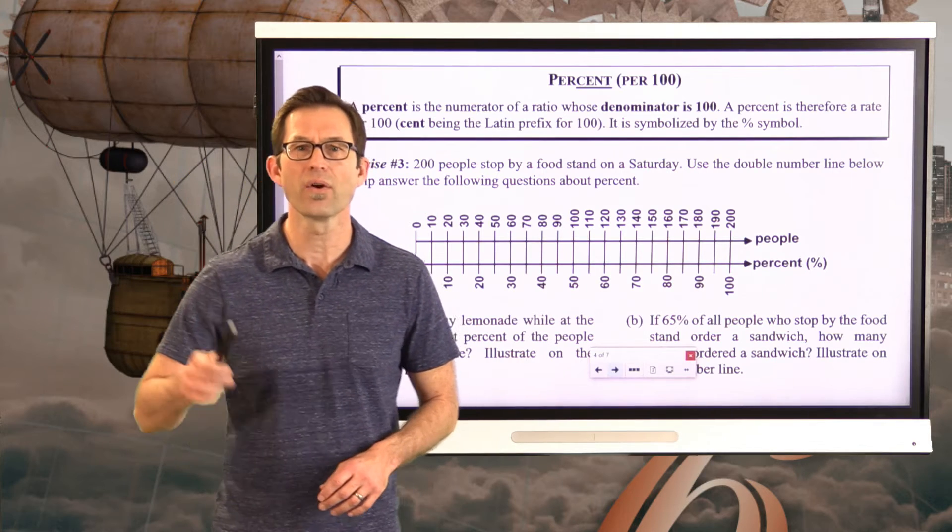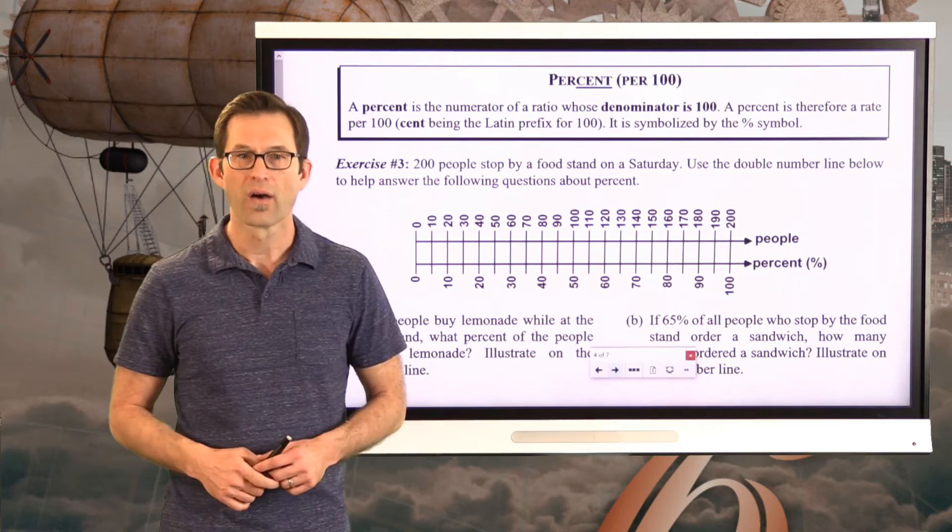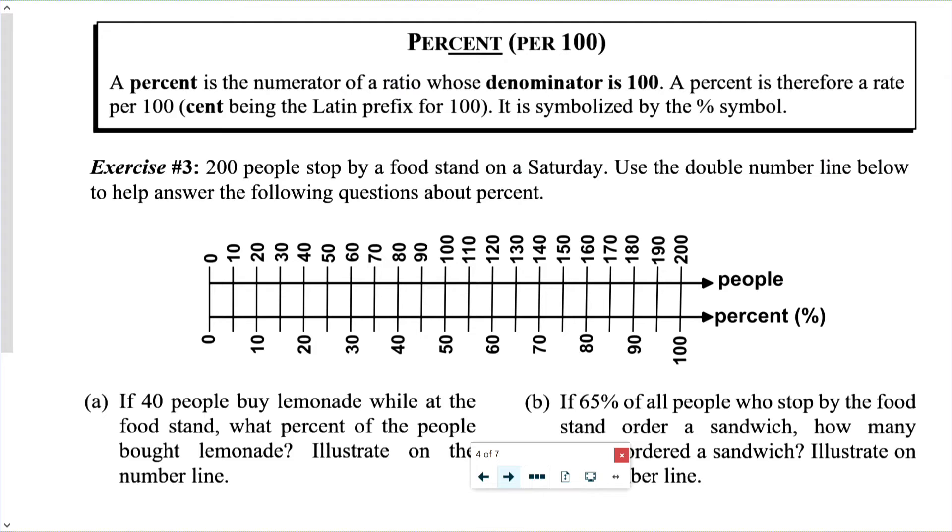And again, this number and this fraction literally are the same thing. This is just a shorthand way of writing this. So 60% is just a shorthand way of writing 60/100. That's it. In fact, even the symbol itself, this symbol was actually invented with this slash representing the division bar. And believe it or not, these two representing sort of the numbers in the numerator and denominator where the number in the denominator is always 100. Let's just keep working with this as a ratio out of 100. Percent is the numerator of a ratio whose denominator is 100.